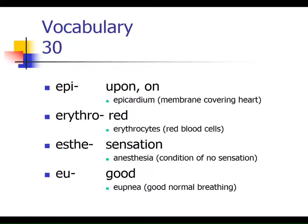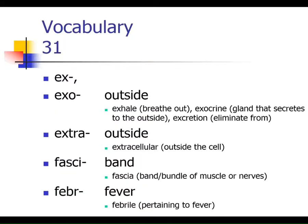'Erythro' means red — your erythrocytes are your red blood cells. 'Esthesia' is sensation, so anesthesia is the lack of sensation. 'Eu' means good — eupnea would be normal or good breathing; eulogy would be a good word. 'Ex' and 'exo' mean outside — exhale, for example. 'Extra' also means outside, as in extracellular matrix, everything outside the cell. 'Fasci' refers to a band or bundle of tissue — groups of structures run in bundles called fascicles. 'Febri' means fever — if you're febrile, you are running a fever.